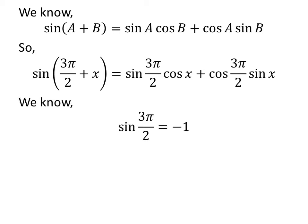We know the value of sine of 3 times pi upon 2 is equal to minus 1. The verification of this trigonometry identity is explained in the video appearing in the upper right corner. The link of the video is also given in the description section.